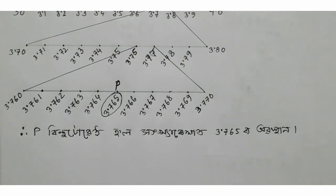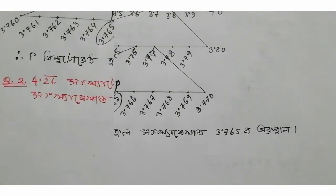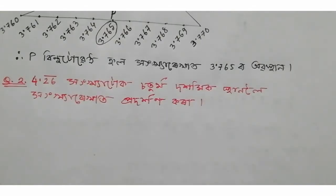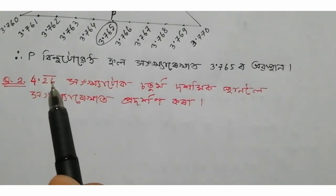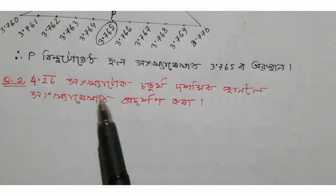So this is the first question. Question number two is 4.26 bar — that is 4.2626 repeating, or 2600 12.